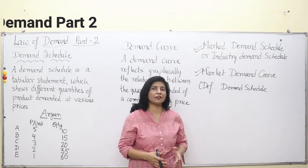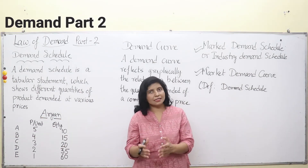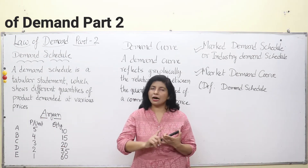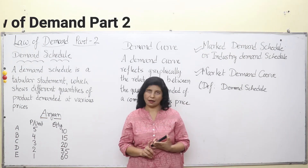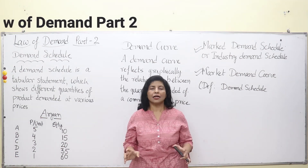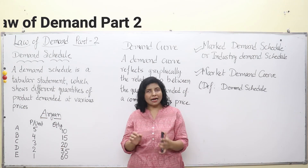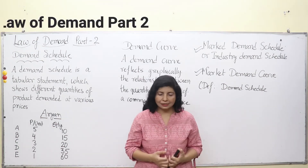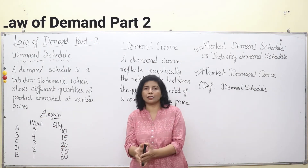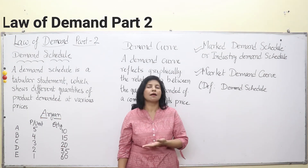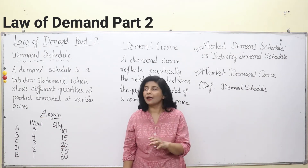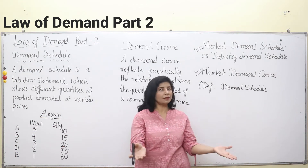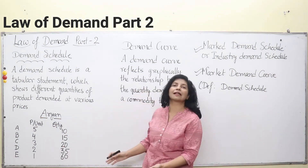This inverse relationship exists because we always have some scarcity of money. Economics does not discuss super-rich people or misers — super-rich people have ample money to fulfill almost every demand, and misers refrain from spending even on essential commodities. Economics focuses on normal people like housewives, students, professionals, or anyone who values money and spends when they need to.